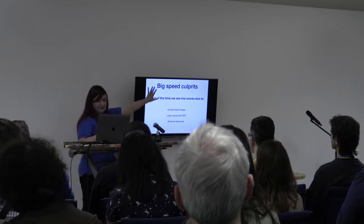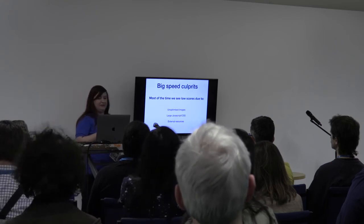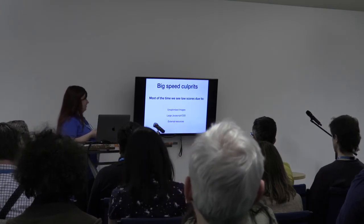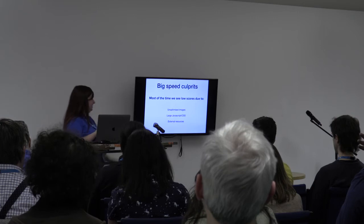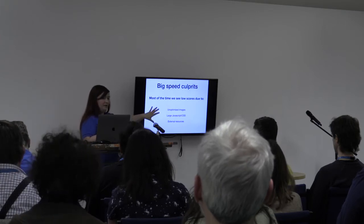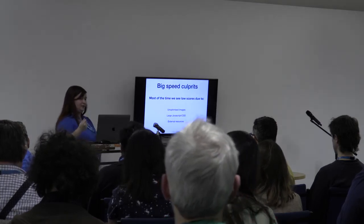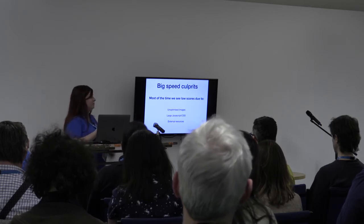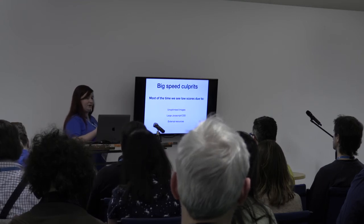Based off my website, the big speed culprits I saw — and this is usually what we see when we run this test on most websites — are things like unoptimised images, which count for a lot of slowdown and are usually the biggest assets on the site. Also large JavaScript and CSS files, and one that comes up when talking to customers: external resources being loaded into the site. Your website might be loading a video from another website or a font from somewhere, so it's relying on another server before it'll load properly.